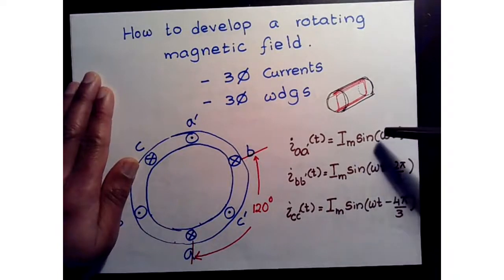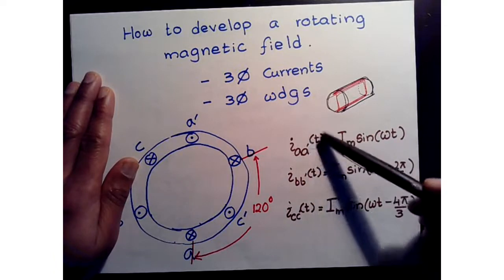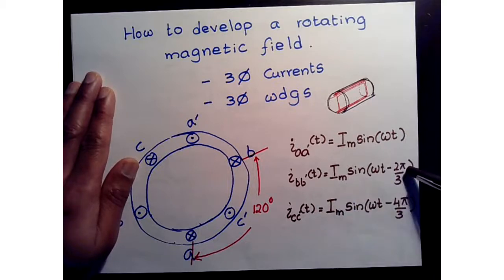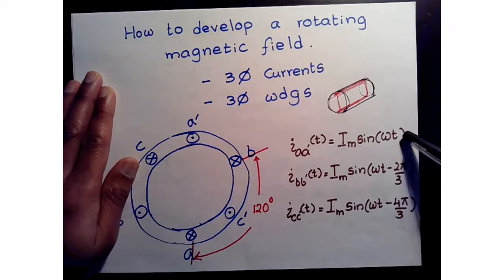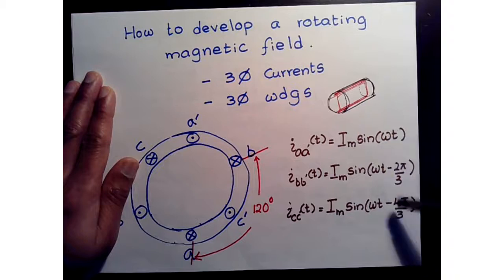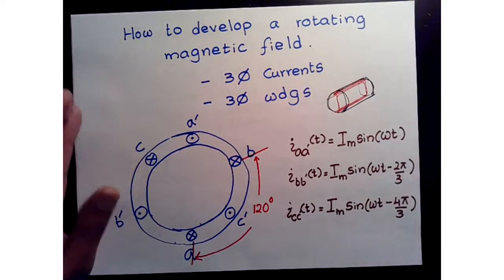Our current IAA-prime is a time-varying function with amplitude Im and frequency ω, with zero phase — that's our reference current. IBB-prime is 120 degrees, or 2π/3 radians, lagging with respect to IA. ICC-prime is 240 degrees lagging behind IA and 120 degrees behind IB. These are called a balanced set of currents — if you add all three you get zero, so the zero-sequence current is zero for a balanced set.